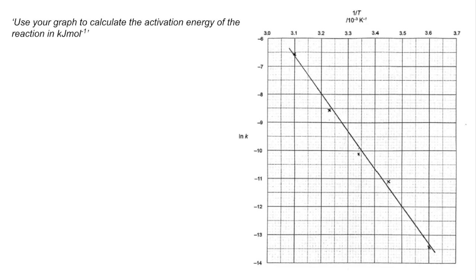So if we move on to a typical exam question now, in the previous part of the question, you might have been asked to complete the table or fill in some blanks where you've had to calculate 1 over T, or the natural log of K. Then you would plot your points and end up with a straight line graph, like this one here. And then the exam question could ask you to use the graph to calculate the activation energy for the reaction in kilojoules per mole.